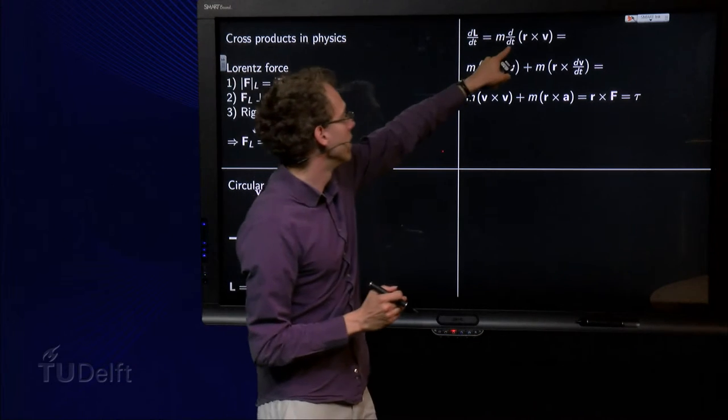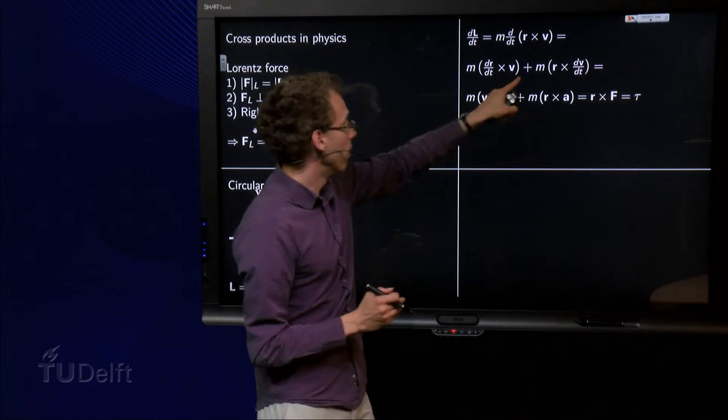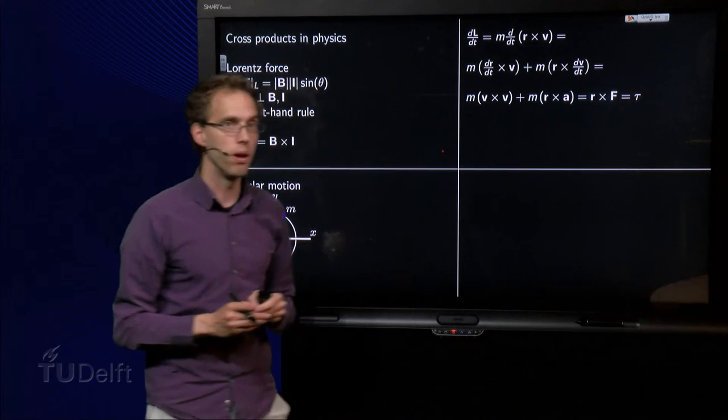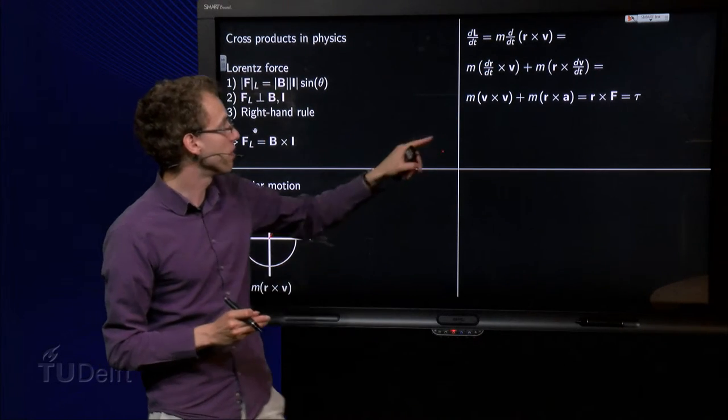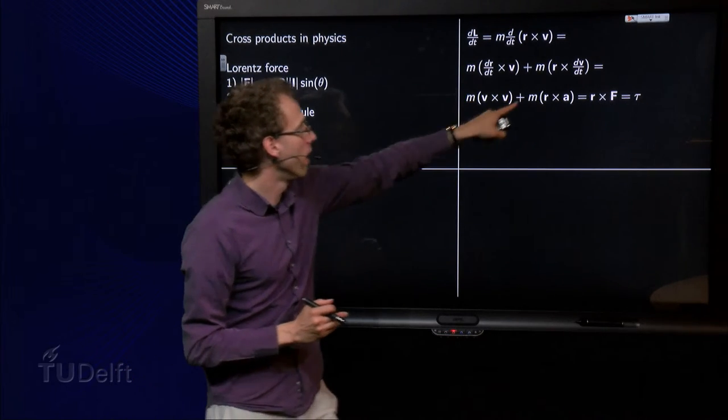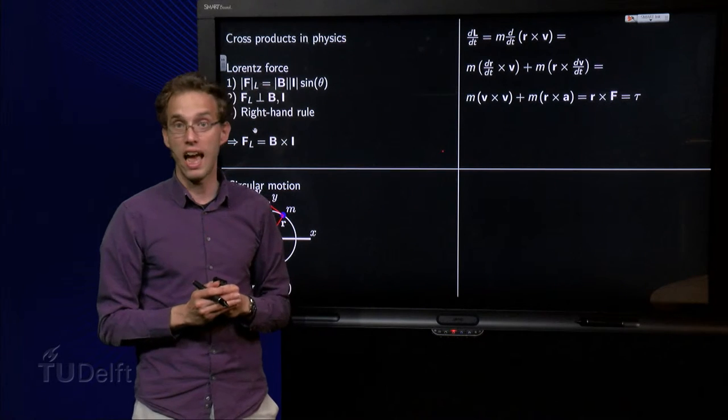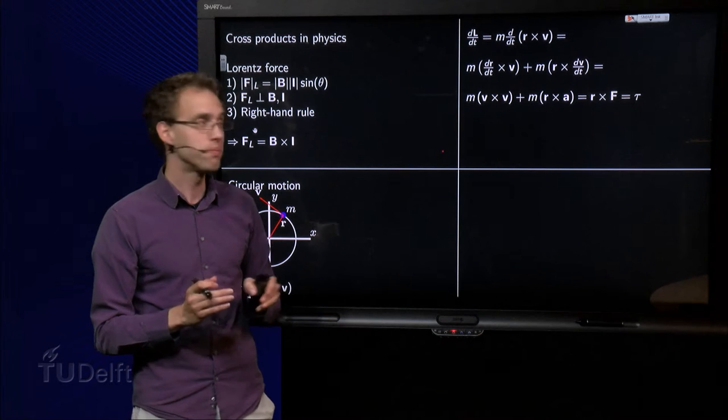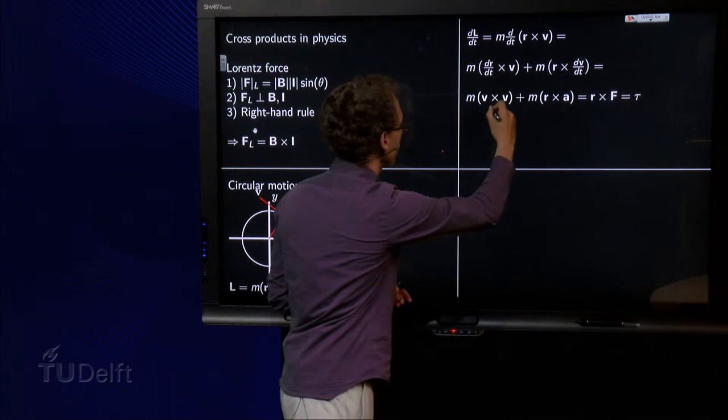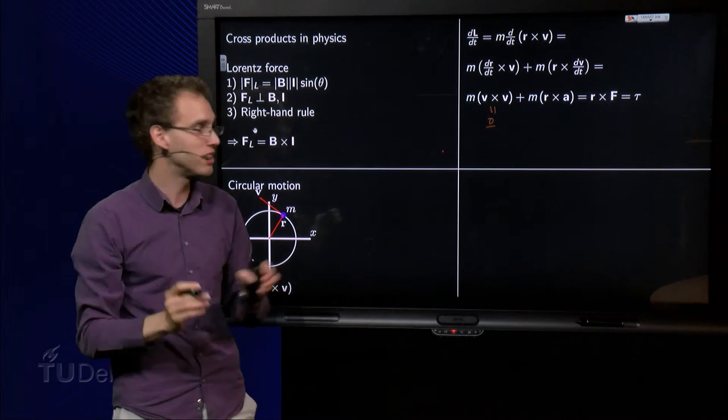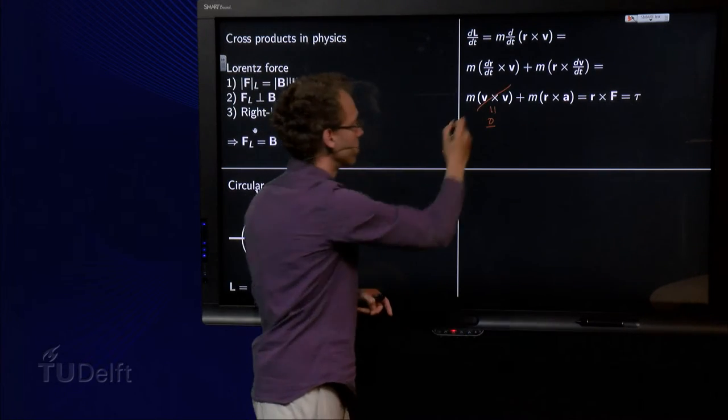So we get dr/dt cross v plus r cross dv/dt, the product rule for the derivative over here. And then we see dr/dt equals v, so this term, and dv/dt equals a, acceleration. But now v cross v, that's just the zero vector, because they are in the same direction. So this term drops out.